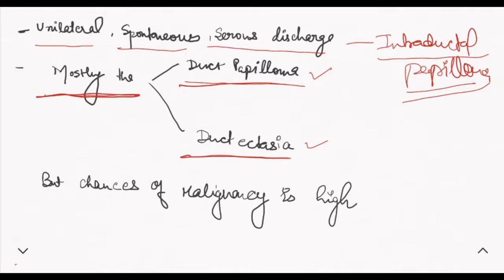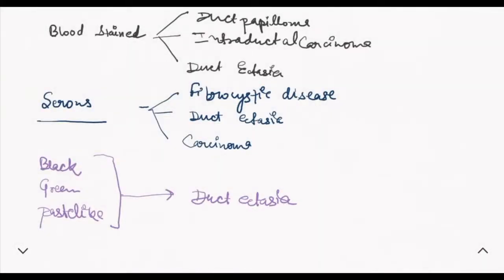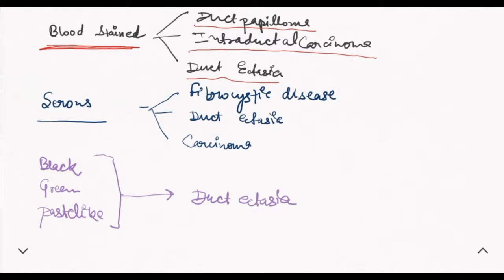The chances of malignancy are high if a person suffers from nipple discharge. Now let us discuss the types of discharge and their causes. Blood-stained discharge: if the nipple discharge contains blood, it is due to duct papilloma, intraductal carcinoma, and duct ectasia. Duct papilloma is the most common cause of blood-stained nipple discharge.